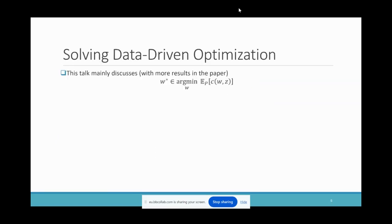In this talk, I will mostly discuss our results for the standard form without context and constraints, which facilitates understanding and highlights our most important ideas. With additional efforts, our results can also be generalized to constrained optimization and contextual optimization — you can find them in our paper.